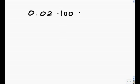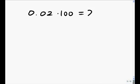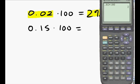Applying our percent relationship backwards, we take the numerical value of 0.02 and multiply by 100. We get 2 percent. That is, the numerical value of 0.02 represents 2 percent.